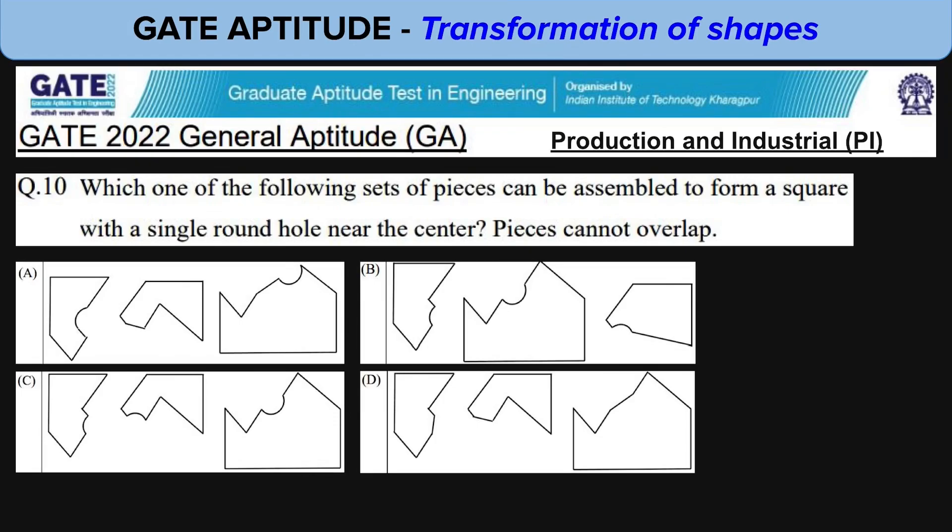Let's look at this question. It came in 2023 in the production paper and it's a two mark question. Let's see which one of the following sets of pieces can be assembled to form a square with a single round hole near the center.